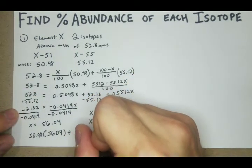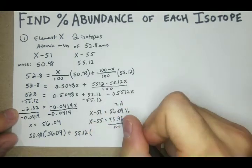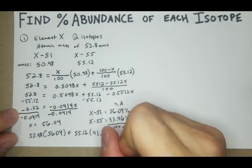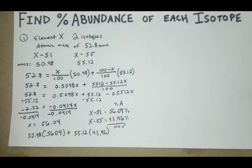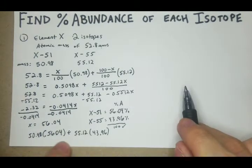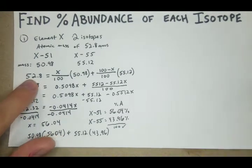Then we're going to add that to the larger isotope, 55.12, times its percentage, which is 43.96. And if all went well, this should add up to this.